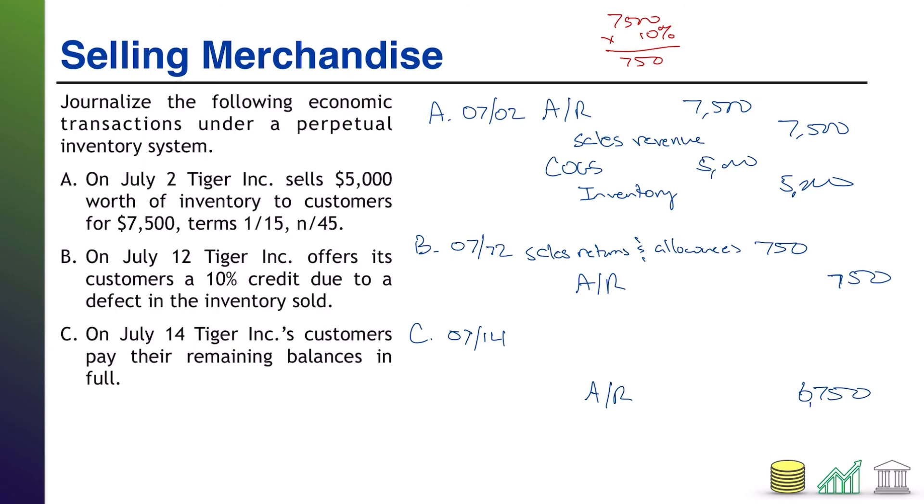Now, absent any sort of discount arrangement, the other side of this would be we receive cash of $6,750. But that's not what's going to happen here. We are still going to get cash. That's not changing. The thing is, we offered these customers a discount, specifically a discount of 1% if they paid within 15 days. That was on July 2nd. It's now July 14th. It is within 15 days, which means this remaining balance that they owe us, they're going to get a 1% discount on that.